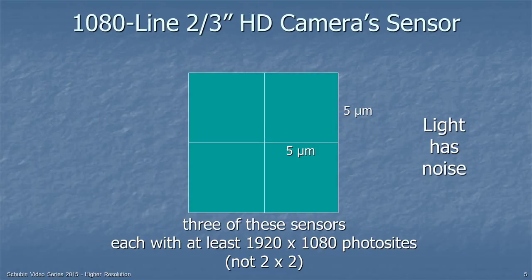Let's take a look at the sensor. I'm only showing four of the photo sites here; obviously there would be 1920 by 1080 typically in an HD camera. Each one, for a two-thirds-inch sensor, is about 5 microns on a side — 5 micrometers on a side. That's not a bad size for collecting light, because light has its own noise built in, and you want to do some averaging to get rid of that.